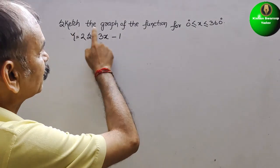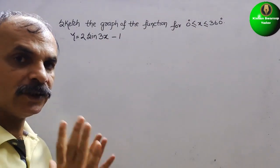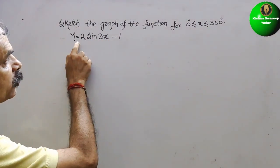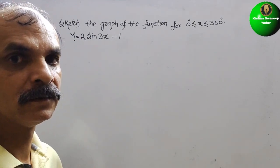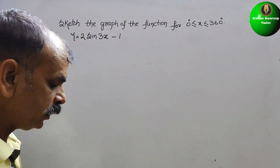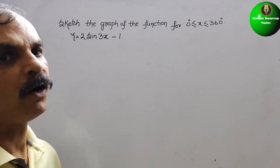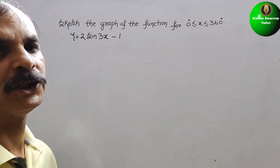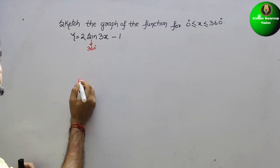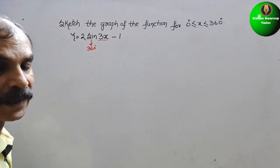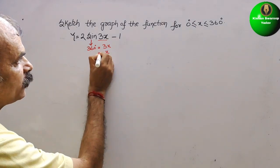The question asks us to sketch the graph of the function y = 2sin(3x) for 0° ≤ x ≤ 360°. We know that one complete cycle of sine is 360°, so for sin(3x) we set 360° = 3x, which gives x = 120°. That means we will get three cycles of sine within 360°.